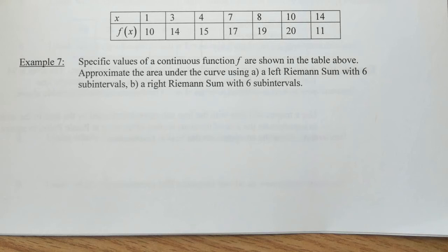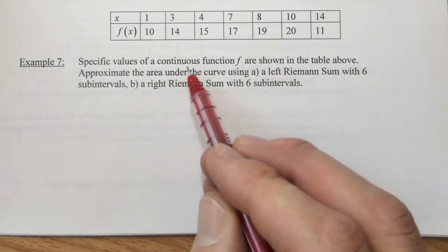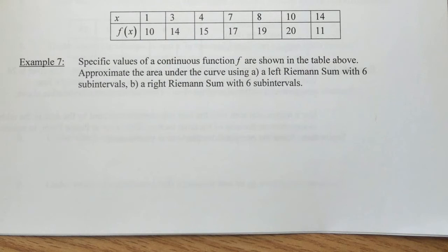We can see from example six that performing a Riemann sum when given a function and having to find all those values takes a lot of time. So quite often on the exam, when the writers are looking for students to perform a Riemann sum, they present a function that is continuous and then give a particular set of values of the function through a table.